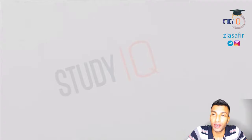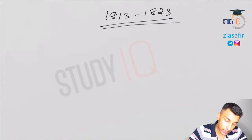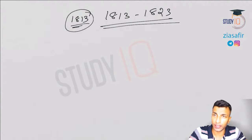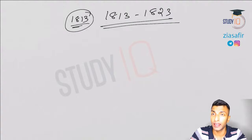Hello students, welcome to Study IQ. In this session we are going to continue with our history discussion. The period I am going to discuss is from 1813 to 1823 — we have already discussed up to 1813. We are discussing history in a mathematical way; we have made a flowchart and are discussing in that order so that you will not forget. We started off with 1757 Battle of Plassey.